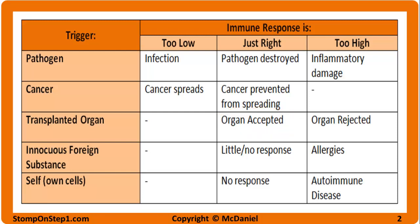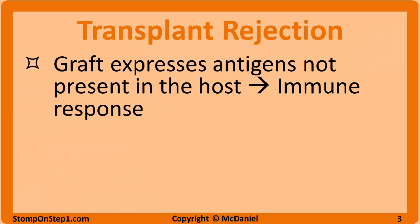We talked in the last video about the different types of hypersensitivity, and there's going to be a lot of overlap between those two concepts. Following an organ transplant, the grafted tissue expresses antigens that are not present in the recipient, and these antigens are recognized as foreign by the immune system. The immune system reacts as if the donated tissue is an infectious microbe and attacks the graft, leading to damage and dysfunction of the transplanted organ. This is not an issue when the patient donates tissue to themselves or when the donor is an identical twin, because the grafted tissue is not recognized as foreign.